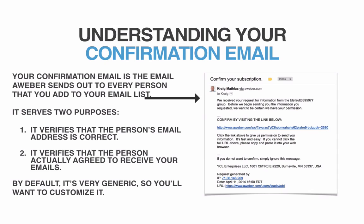By default, this confirmation email is very generic. The one shown is the default — it says something like 'We received your request for information from the...' and then your list name. So if you called it the Video Series List, it'll say 'we received your request for information from the Video Series List group.' It's very generic — 'before we send you anything, we want to obtain your permission, confirm by visiting the link below.' That's why you want to customize this.